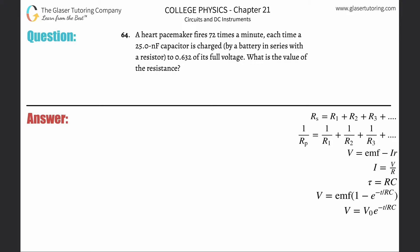Problem 64: a heart pacemaker fires 72 times a minute. Each time, a 25 nanofarad capacitor is charged by a battery in series with a resistor to 0.632 of its full voltage. What is the value of the resistance? Focus on what's given: we have firings per time, or charges per time.